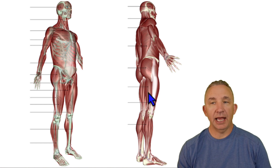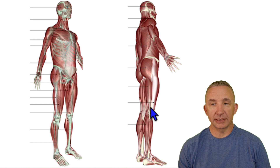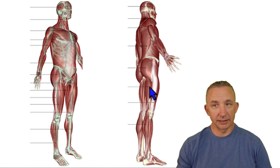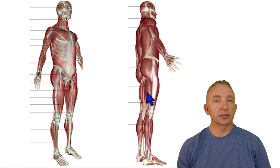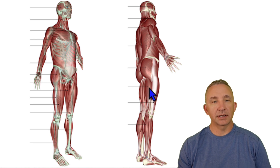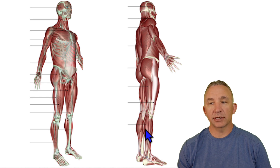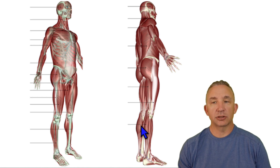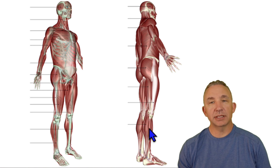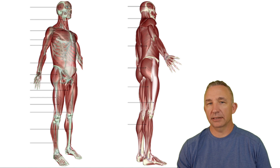Then we look at our hamstrings. The one on the lateral side is biceps femoris — this is the long head, and you can slightly see the short head. Biceps refers to two heads along the femur on the posterior side. The other two hamstrings are semitendinosus and semimembranosus. You can see the IT tract again. Then we get down to our major calf muscle, gastrocnemius, which has two heads. Deep to that I have soleus.